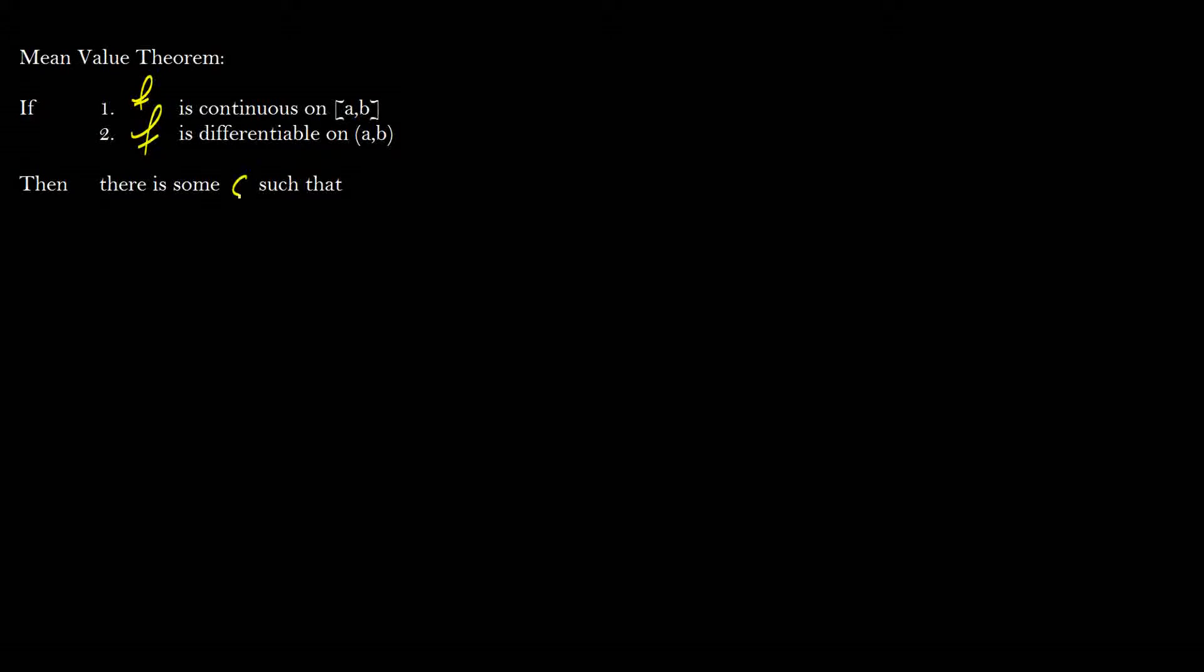Then there is some c such that f prime of c, can you guess where this is going? Probably not. Such that f of b minus f of a over b minus a is equal to f prime of c. And we can rewrite this to say that f of b minus f of a is equal to f prime of c times b minus a. And the question is, does this look familiar? And it might, it might.